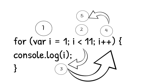After printing 10, i is incremented to 11. Now the condition fails because 11 is not less than 11 — it's equal to 11. So the values 1 to 10 are printed and the for loop breaks, because the code block will not execute again with i equal to 11.